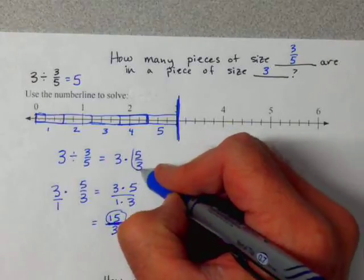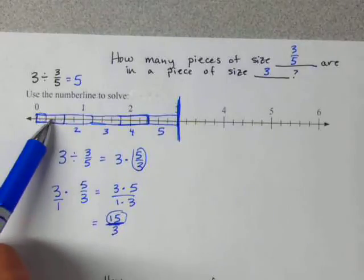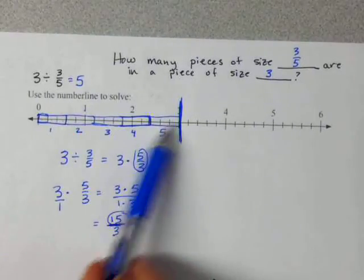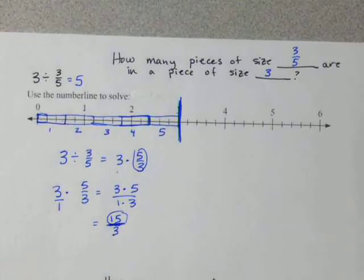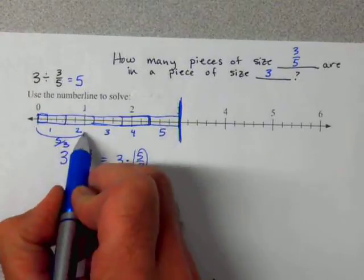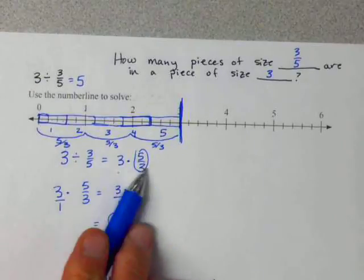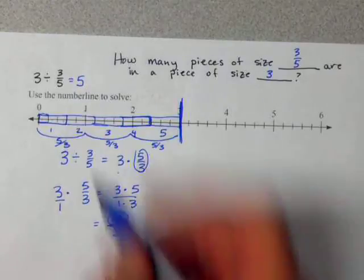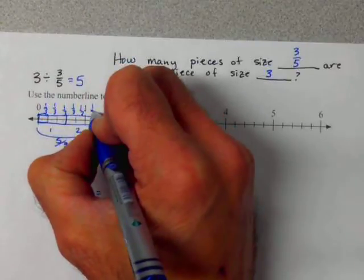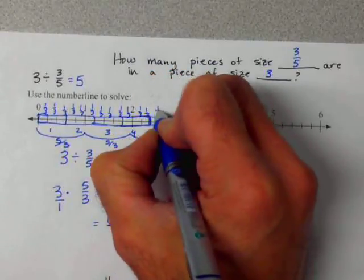Where is the 5 thirds piece? If this is 1 third, there are 1, 2, 3, 4, 5 of those in 1. And there are 1, 2, 3 — that's where that is in the expression. So this right here is 5 thirds, this right here is another 5 thirds, and this right here is another 5 thirds. And there are 1, 2, 3 — that's this expression.